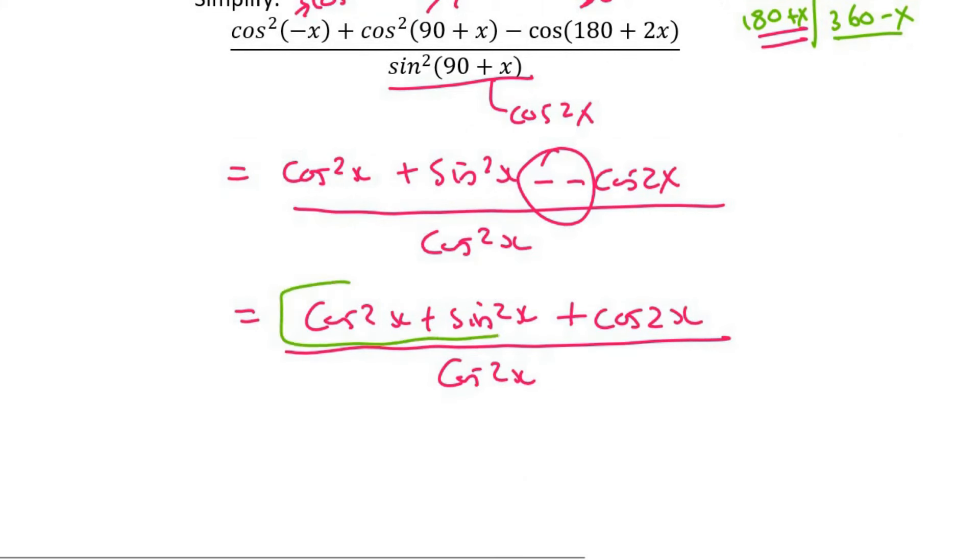Now from grade 11, we should identify that this part here is always going to be equal to 1. So well done if you got that. So it's going to be 1 plus cos 2x over cos squared x. Now you should identify this cos 2x over here. That's something new for grade 12. And so that's a double angle.